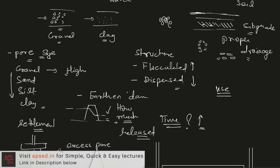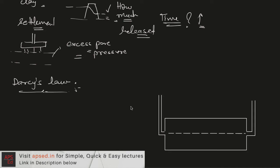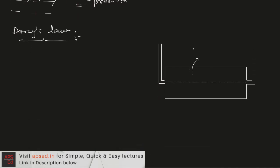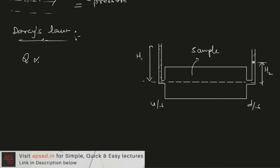Those are a few of the uses of permeability. Next, we can talk about Darcy's law. In this experiment, a cylindrical tube contains a soil sample through which water flows due to a difference in head. Inserting piezometers on the upstream and downstream sides, the upstream head measured from the centerline is h1 and on the other side is h2.